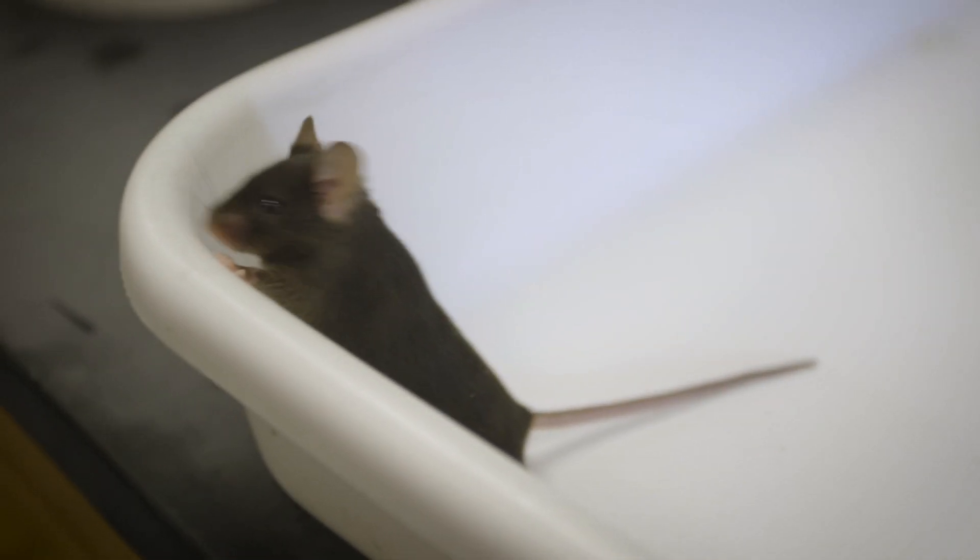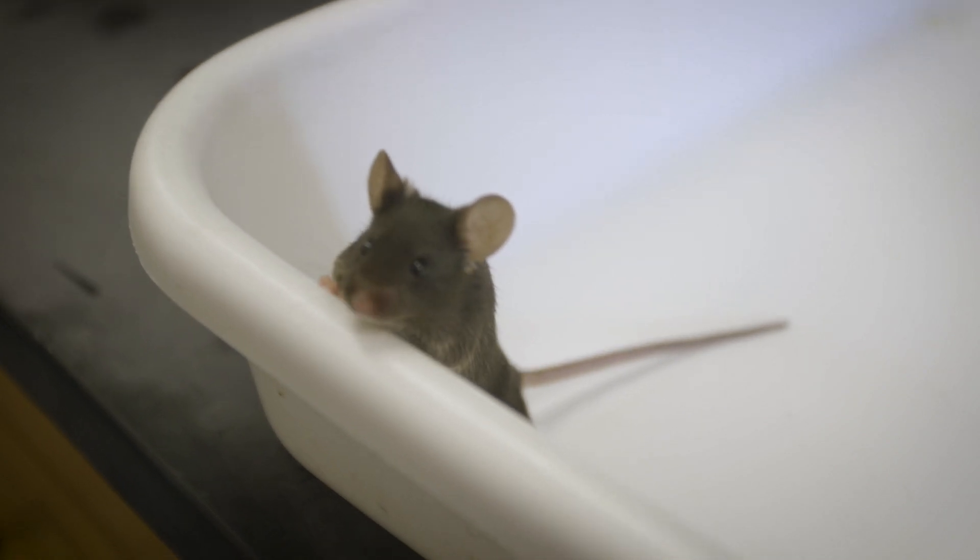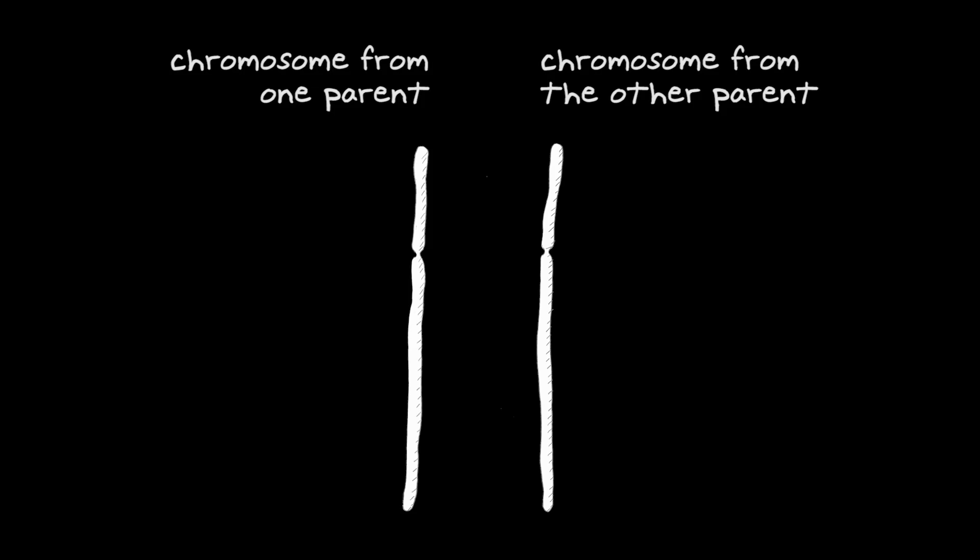To try to prevent the deafness in the Beethoven mouse, we reasoned that the mouse had one normal copy of the gene that would be adequate, and all we needed to do was to disrupt the mutant copy of the gene.